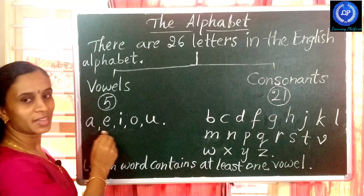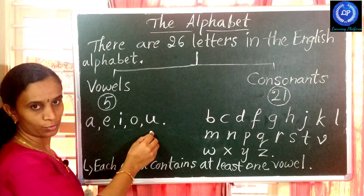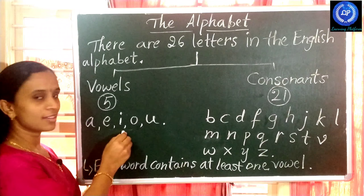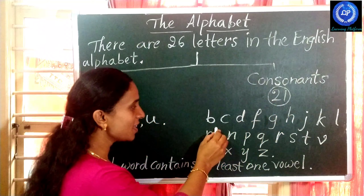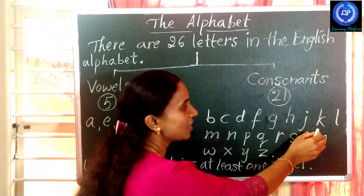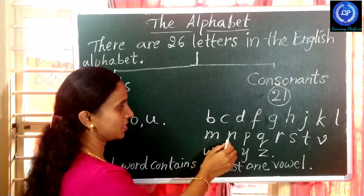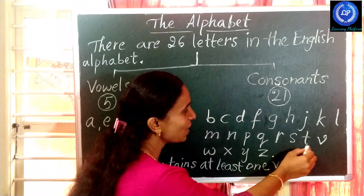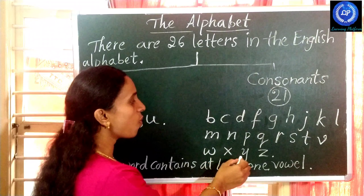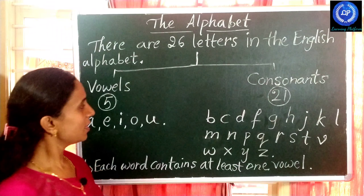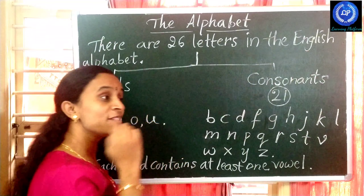The vowels are: A, E, I, O, U. The sounds are: a, e, i, o, u. And the consonants are 21: B, C, D, F, G, H, J, K, L, M, N, P, Q, R, S, T, V, W, X, Y, and Z. These are the 21 consonants.